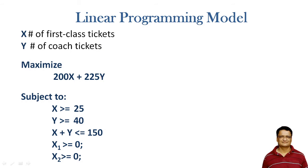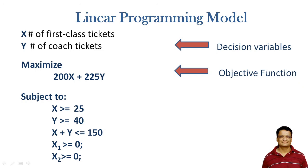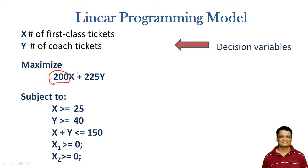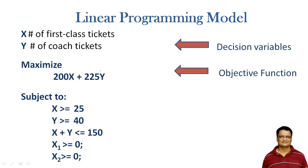x and y are your decision variables, and we need to decide their quantities to maximize the profit, given by 200x + 225y. Here, 200 is the profit made by selling one first class ticket and x is the number of first class tickets, whereas 225 is the profit made by selling one coach ticket and y is the number of coach tickets. This becomes the objective function.